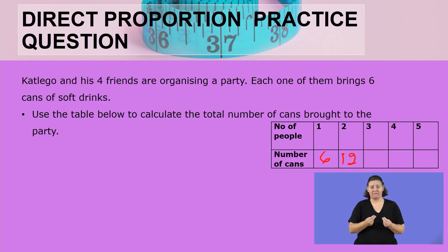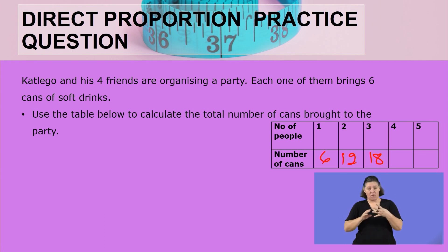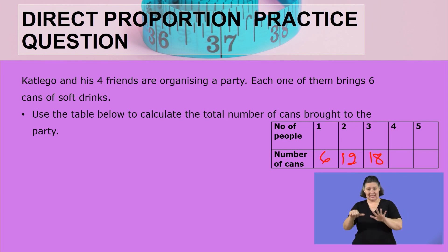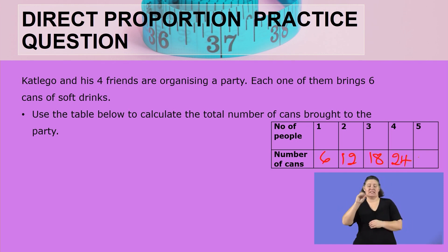If they are having 12 and are joined by an extra friend bringing six, we add six and get 18. If joined by a third friend, we add six again — 18 plus 6 — and we get 24. And if they are five, we add another six and get 30. Whether you multiply or add, you get the same answer. I think it is easy to do calculations with direct proportion.